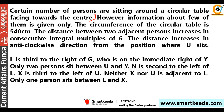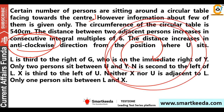The circumference of the circular table is 540 cm. The distance between two adjacent persons increases in consecutive integral multiples of 6. So the distance between two adjacent persons increases in multiples of 6 in the anti-clockwise direction. Clockwise is this way, anti-clockwise is this way — you have to increase the number either way.